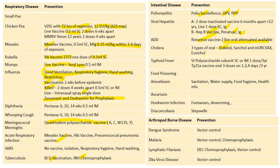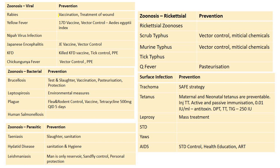Cholera: three types of oral vaccines — Dukoral, Shanchol, and mORCVAX. Typhoid: Vi polysaccharide subunit vaccine subcutaneous or IM, one dose every three years; Ty21a vaccine — three doses on days 1, 3, and 5, every three years. Amoebiasis: sanitation, water supply, food hygiene, and health education. Hookworm infection: insisting on footwear, deworming, and prevention of open-air defecation. Dracunculosis: aimed at abolition of step wells and vector control.